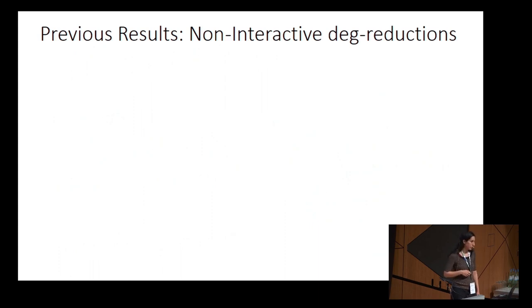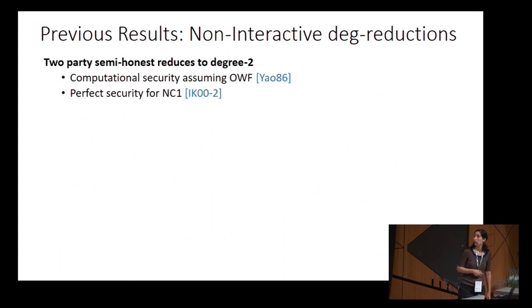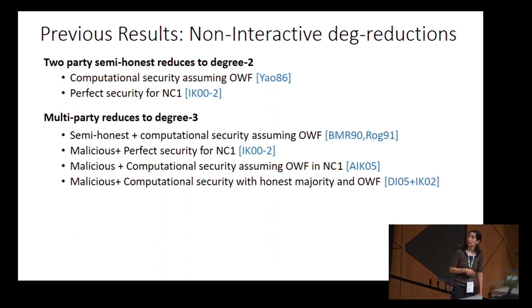Let's go over some previous results. Many classic protocols are actually implicitly non-interactive reductions. For example, Yao's protocol is a non-interactive reduction in the two-party semi-honest setting. In the multi-party setting, we have reductions to degree 3 functions, and usually they use something called randomized encoding.